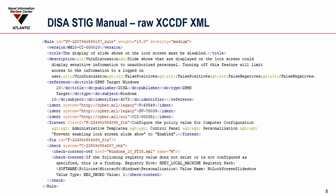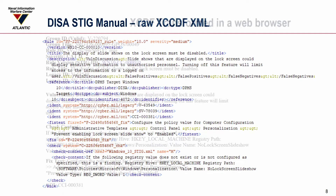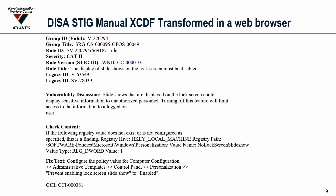Here's an example from the DISA STIG — some raw XCCDF XML. There are lots of tags, fields, and data: version fields, title fields, description fields, and IDENT system references for vulnerability IDs. This is all just for policy. But if we transform that XML, here are the same data elements displayed in a much more human readable format — printable and more of what we're expecting a DISA STIG manual to look like.